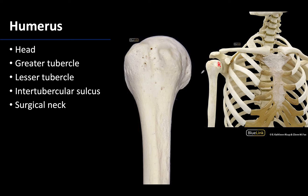Opposite the head of the humerus is the greater tubercle, laterally placed on the proximal humerus. The head always faces medially. This is called the greater tubercle because it is larger than the lesser tubercle, and it is larger because three of the four rotator cuff muscles distally attach here — those rotator cuff muscles whose bellies are located posteriorly.